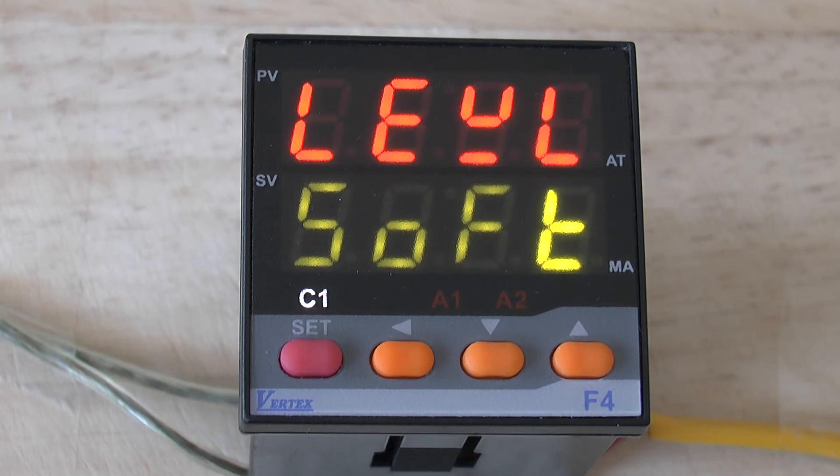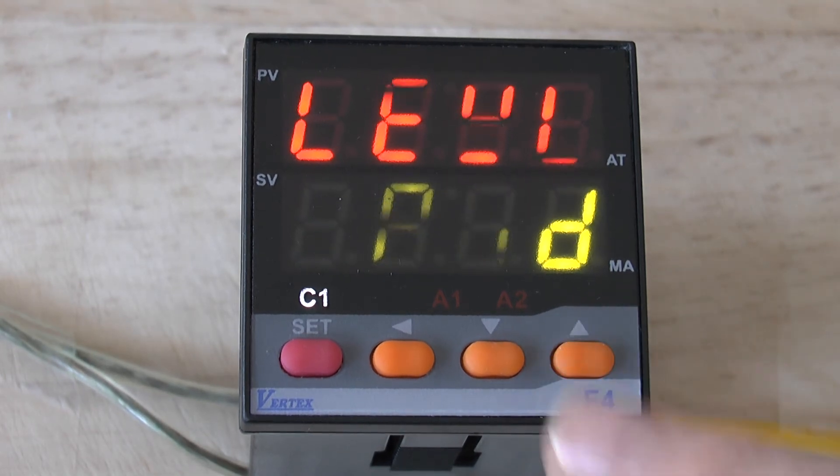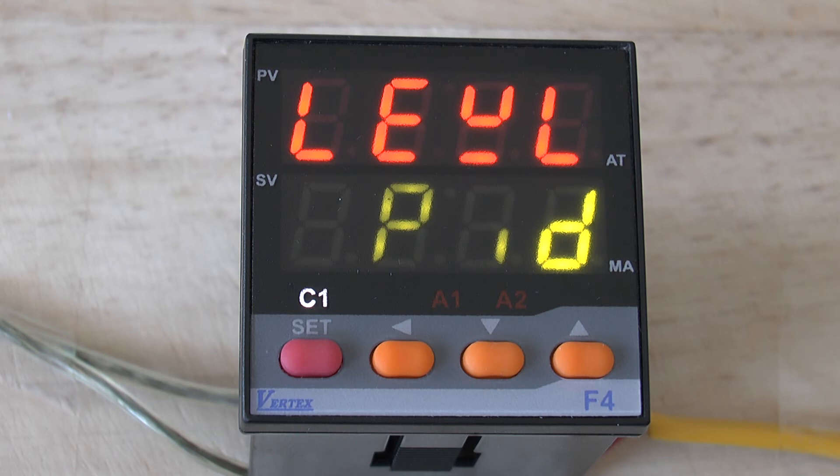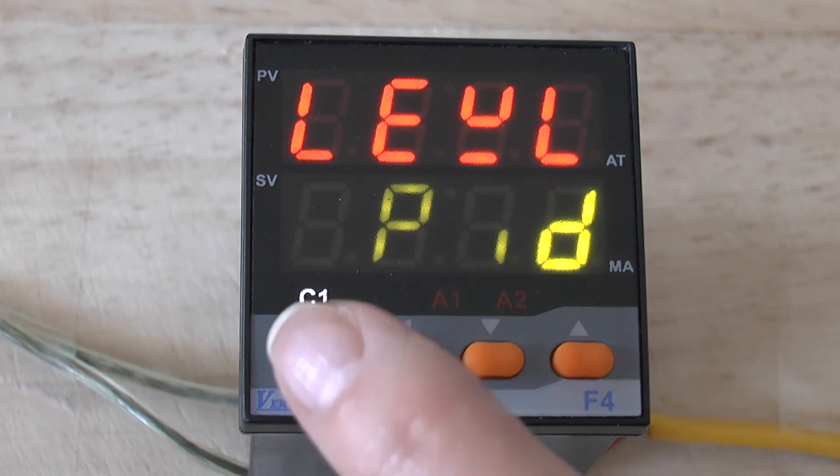The next level is the PID level. You reach this by just pushing the UP button once and you can see the controller READS level and PID. In order to access the parameters in the PID level, just push the SET button.